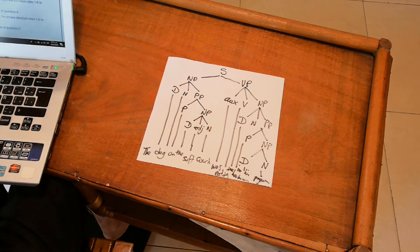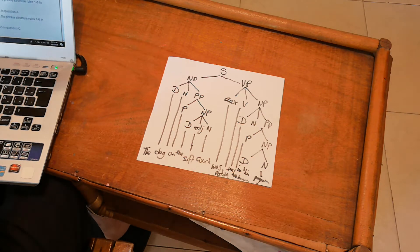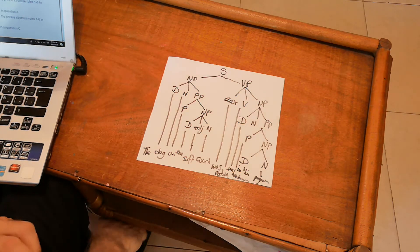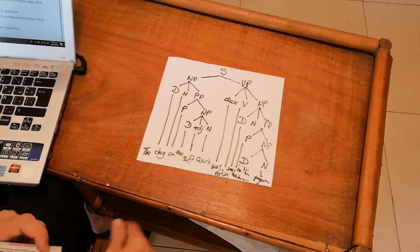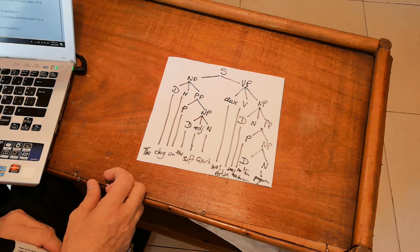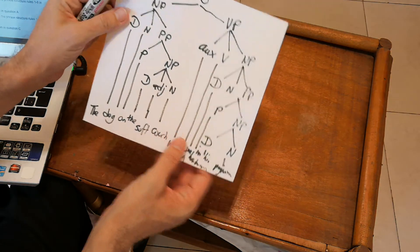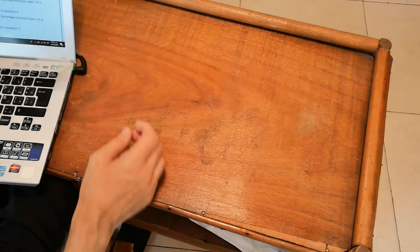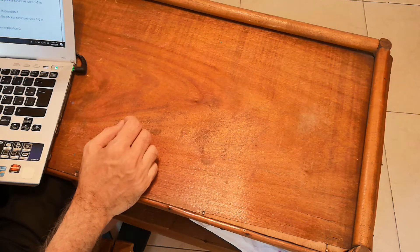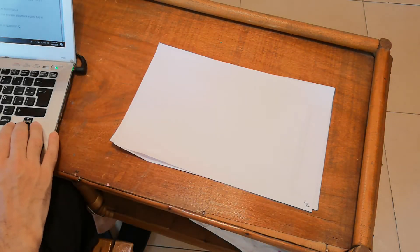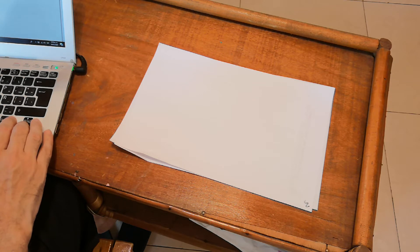Then C says: draw the phrase structure tree that is defined by applying the phrase structure rules one to six in set two. I'm not going to do that — you will do that on your own and then show me. And D says: give an appropriate sentence for the tree you have drawn in question C, similar to what I did. Set two is for you to do on your own. Let's continue with today's lesson.